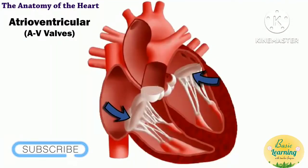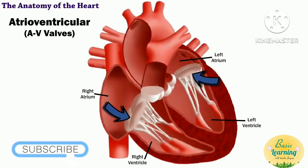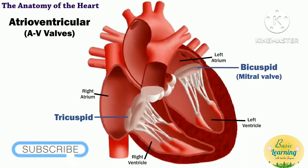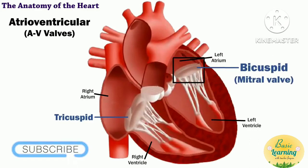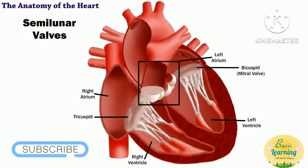The atrioventricular, or AV, valves are between the atria and the ventricle on each side of the heart. They are the tricuspid and the bicuspid, or mitral, valve. The tricuspid is on the right side and the bicuspid is on the left side.